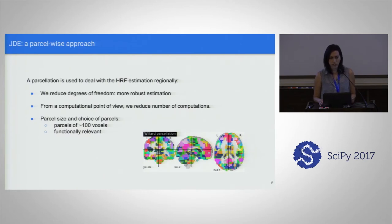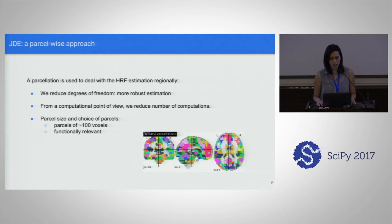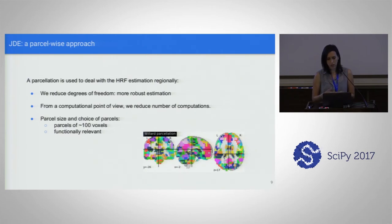We do it regionally because it's computationally expensive. We use a parcellation, and for each parcel we estimate an HRF and all the parameters. This way we reduce degrees of freedom, giving more robust estimation, and the computational load decreases a lot. As a recommendation, we use parcels of around 100 voxels that are functionally relevant, assuming they will have the same HRF shape.